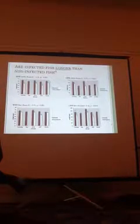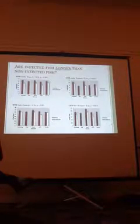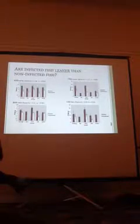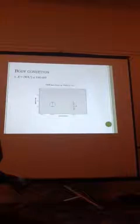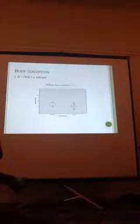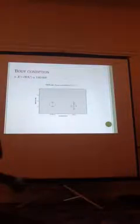We performed a mixed model with a fixed effect of infection and a covariate of stream. What we ended up finding was that our infected fish were actually longer than our non-infected fish, which wasn't exactly what we had thought. We also asked the question as to whether infected fish were leaner than non-infected fish, and our infected fish were in fact heavier across both species on both electrofishing events. We then used the collected weight and length data to calculate Fulton's K value, our measure of body condition. We found no statistical difference between infected and non-infected fish, except for in the creek chub collected in late June, whose body condition was lower than non-infected creek chub.